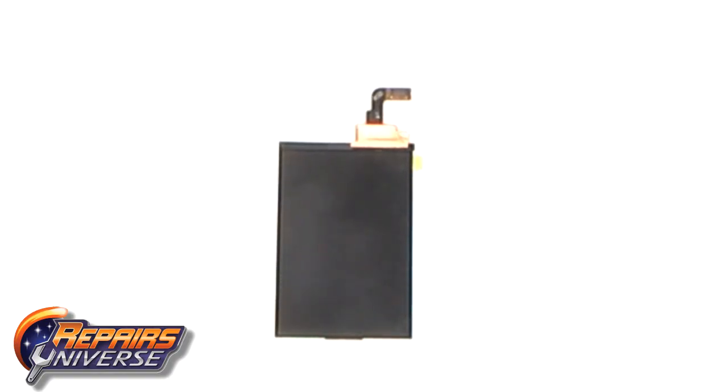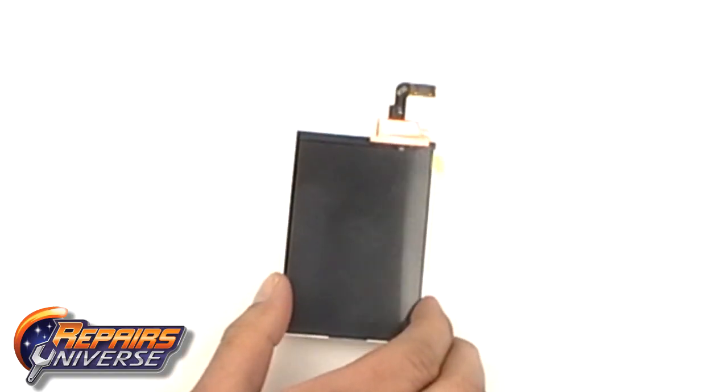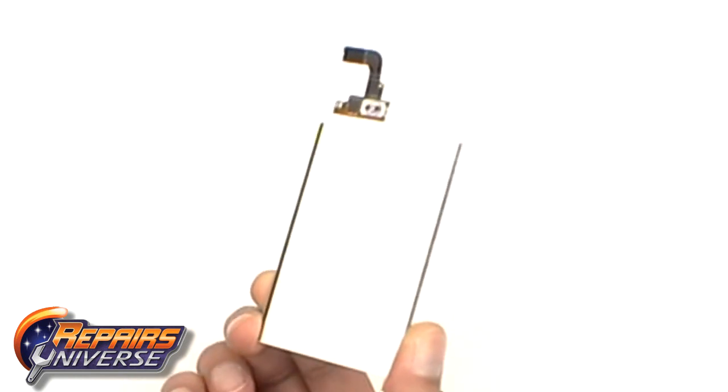This is the internal display for your iPhone, known as the LCD. The LCD projects the image behind the touchscreen digitizer.